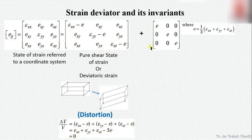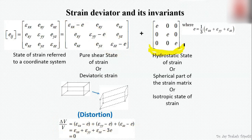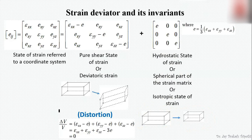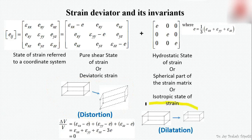The other matrix is known as the hydrostatic state of strain, or the spherical part of the strain matrix, also called isotropic state of strain. If you apply this type of strain on a body, the body contracts or expands. In many books and articles, the deviatoric deformation is termed as distortion, and the hydrostatic deformation is termed as dilatation.